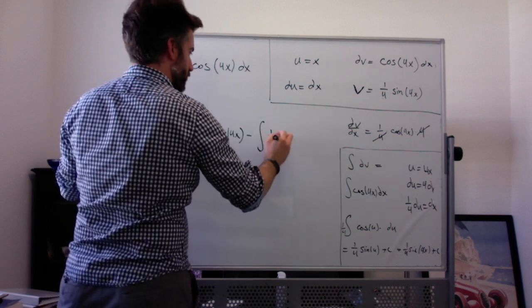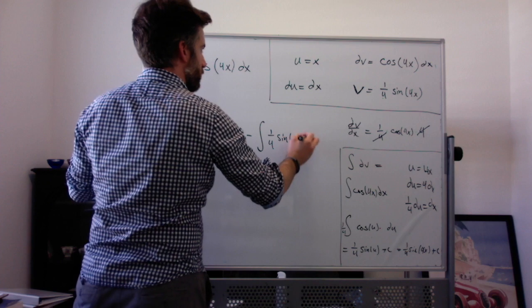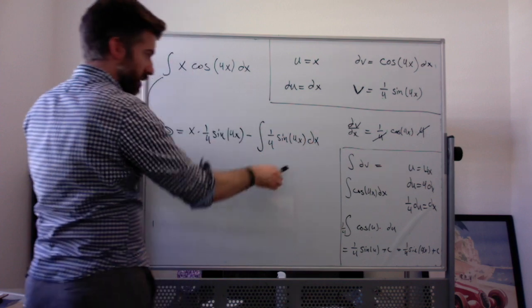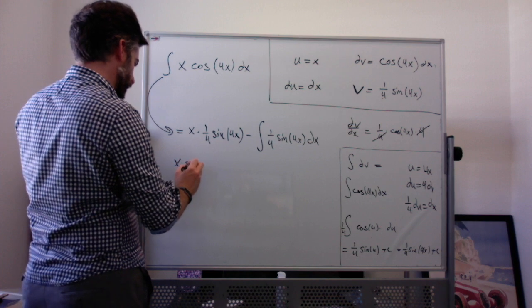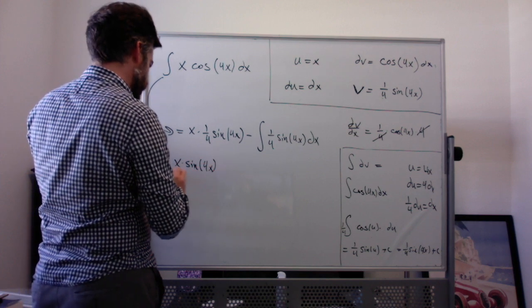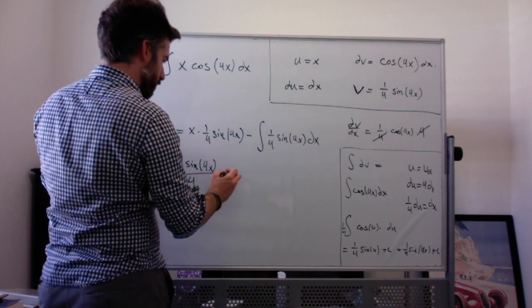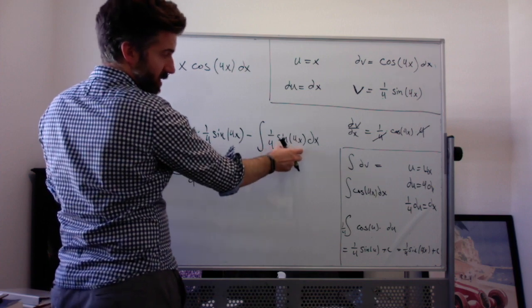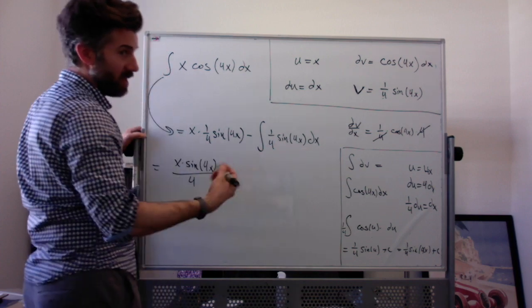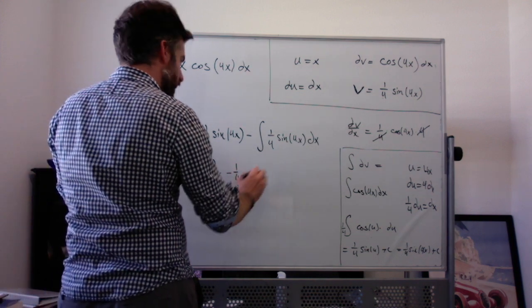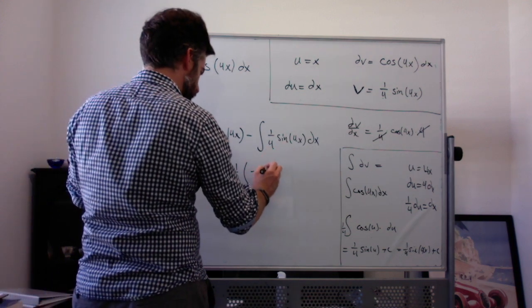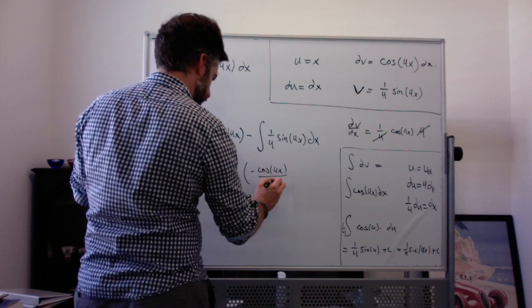So this ends up equaling uv minus the integral of v du, which is x times 1 fourth sine of 4x minus the integral of 1 fourth sine of 4x dx. So then integrating this, I'm going to write this as x times sine of 4x all over 4, minus the integral of sine of 4x is going to be negative cosine of 4x divided by another 4. So I have minus 1 fourth, and the integral of this is negative cosine of 4x all over 4.